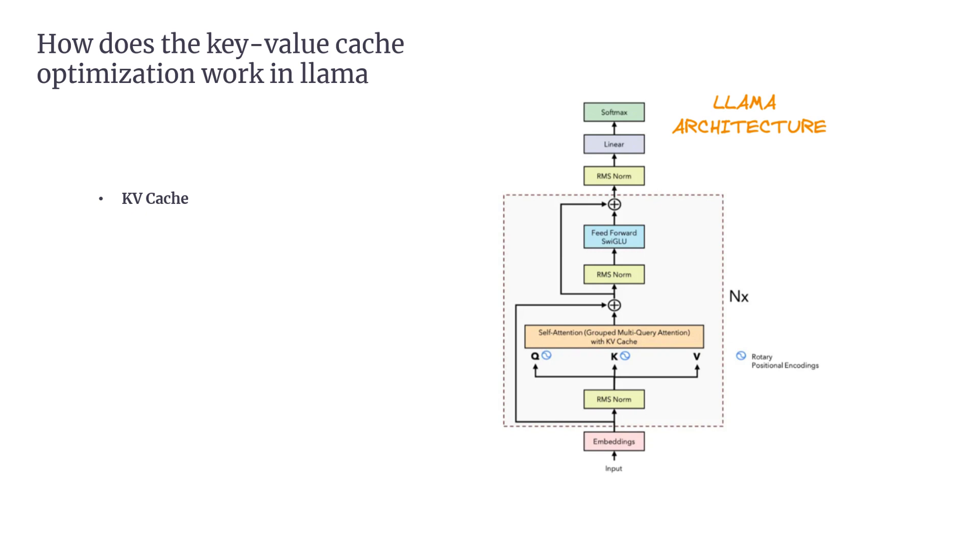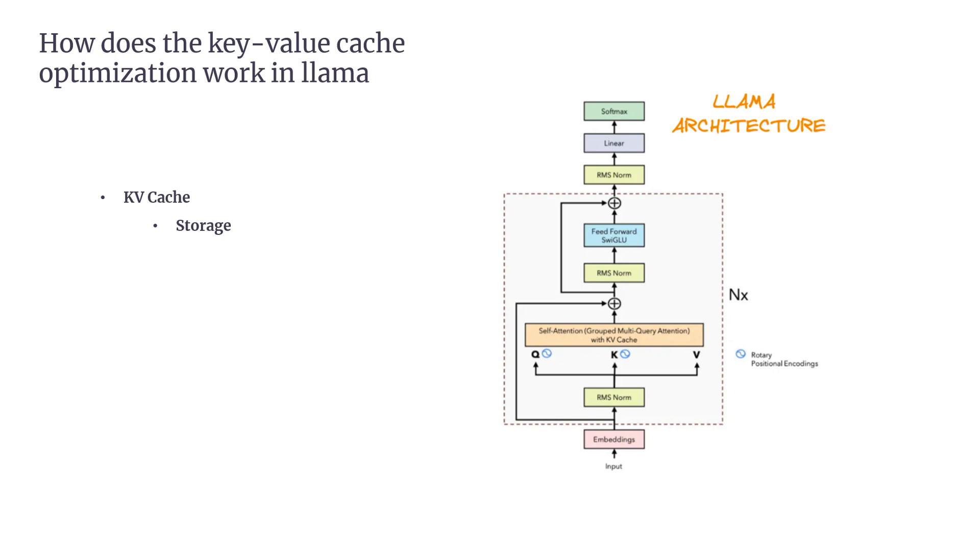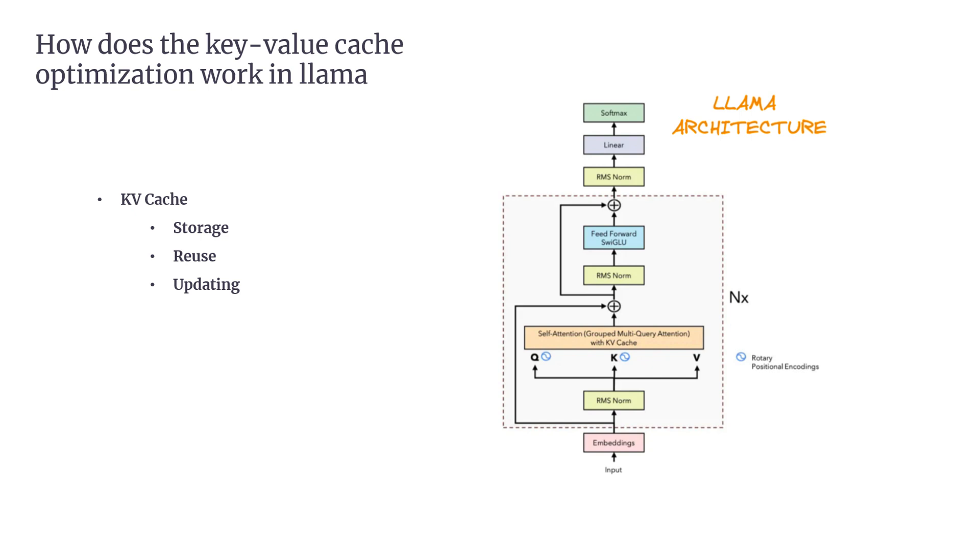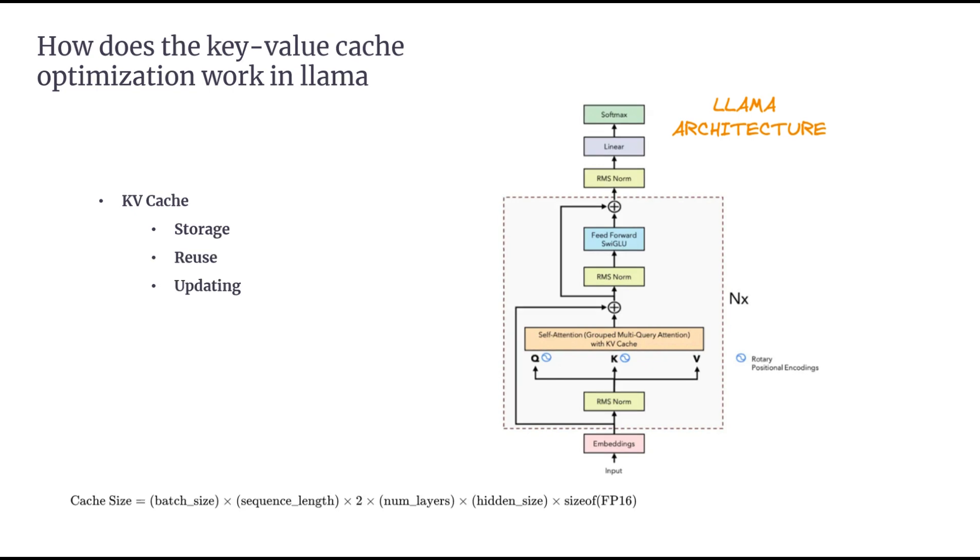Here's a breakdown of the key components. The KV Cache acts like a memory bank, storing key value pairs from the self-attention layers. Instead of recalculating the key and value vectors for all tokens every time, the model retrieves the pre-computed ones from the cache. This greatly speeds up the process. For each new token generated, only the key and value vectors for that token are calculated and added to the cache. For example, if we have a Llama-7B model with a batch size of 1 and a sequence length of 4096 tokens, the KV Cache would require around 2 GB of memory.